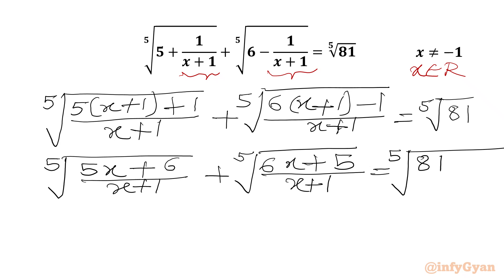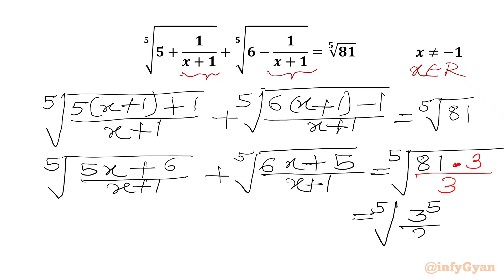Now I will multiply the RHS radicand by 3 in the numerator, so I need to multiply by 3. Now 81 times 3 is 243, which we can write as fifth root of 3^5 in the numerator and 3 in the denominator. So this will give us 3 over fifth root of 3.